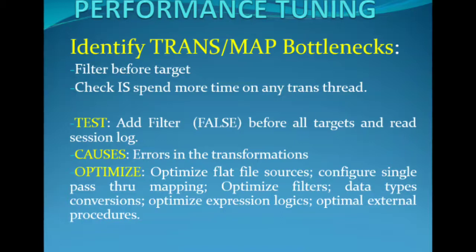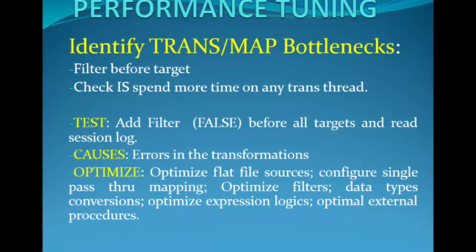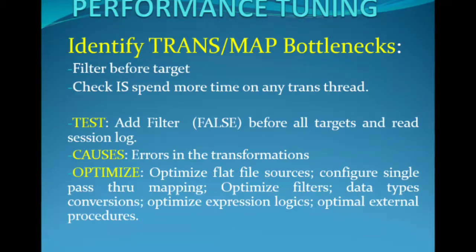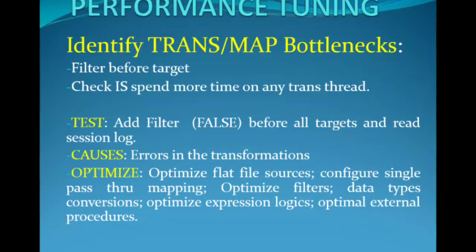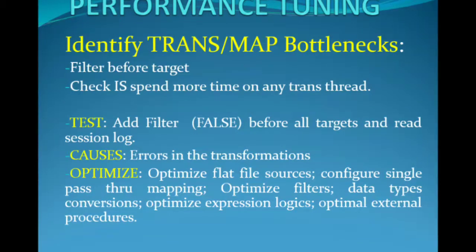To identify mapping bottlenecks, add a filter transformation before each target definition of the mapping and set the filter condition to false so no data is loaded into the target. If the session runtime is the same as the original session, you have a mapping bottleneck. You can also identify mapping bottlenecks using performance details — high error rows and rows in lookup cache counters indicate a mapping bottleneck. Add pass-through partition points to all transformations and read thread statistics.